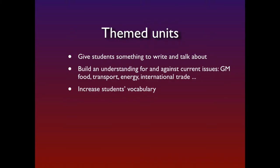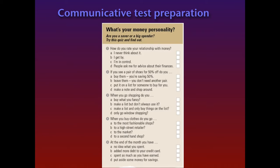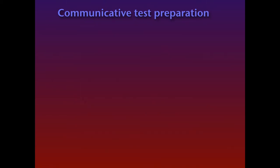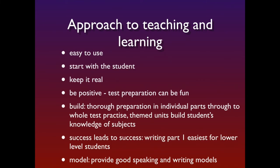Achieve IELTS features units based around themes, with the introductory section introducing each theme. We chose this approach because it gives students something to write and talk about in the writing and speaking tests, builds up an understanding of for-and-against current issues — for example GM food, transport and energy — and increases students' vocabulary. If we take an example from level 2, unit 2, we can see the vocabulary load in the unit based around money. We also tried to make test preparation fun by introducing quizzes, making describing diagrams and processes more enjoyable through pair work, and using walk-round or information-gathering activities to prepare for writing tasks.